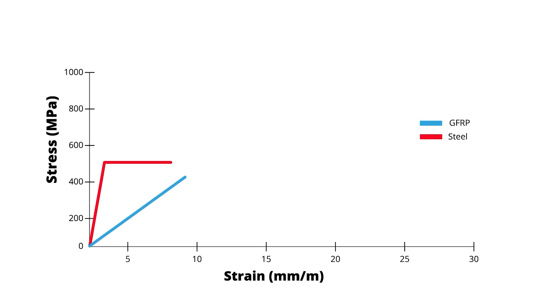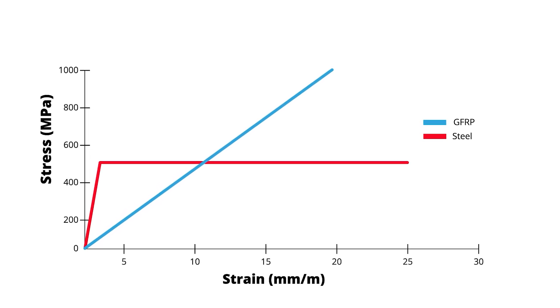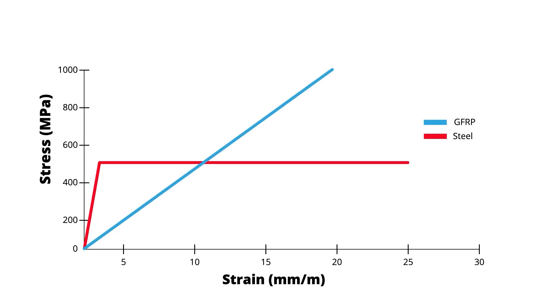However, on the ultimate tensile load, we are able to get much better performance — we can reach around 1000 MPa for GFRP. One complication is that properties are not linear across diameters. We expect higher performance from small diameters, typically 6–8 mm, compared to very large diameters up to 50 mm, which would be closer to steel, maybe in the 600 MPa range.